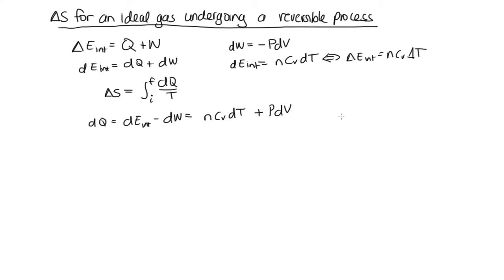This is an ideal gas, so it obeys the ideal gas law. PV equals nRT, which allows us to write P equals nRT over V. Now we can replace this P, so we've got dQ equals nC_v dT plus nRT over V dV.